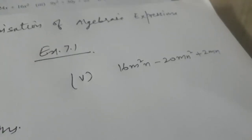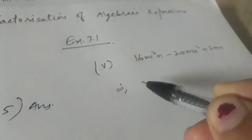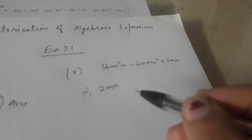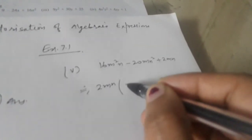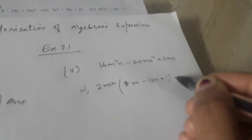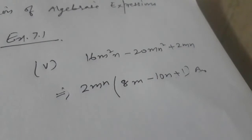The fifth part is 16m² minus 20mn² plus 2mn. Here we can take 2mn as common. Within the bracket we will be left with 8m minus 10n plus 1, since 2mn times 8m is 16m², and so on. So 2mn(8m minus 10n plus 1) would be our answer.